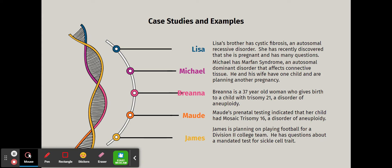Maud is based on a real patient who had prenatal testing indicating her child had mosaic trisomy 16 — a disorder of aneuploidy that only affected some of the cells. James is planning to play football for a Division I college team and has questions about a mandated test for sickle cell trait.